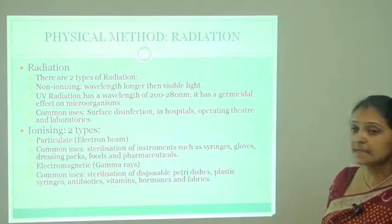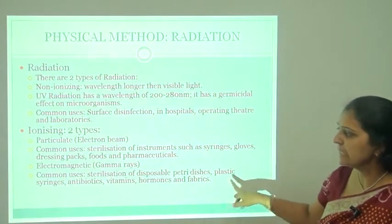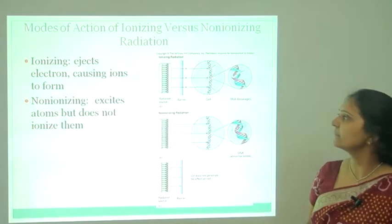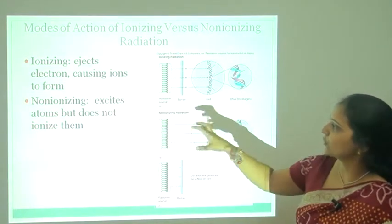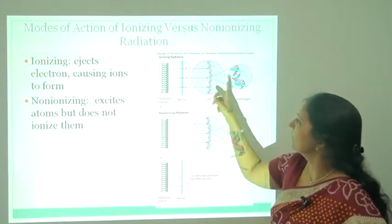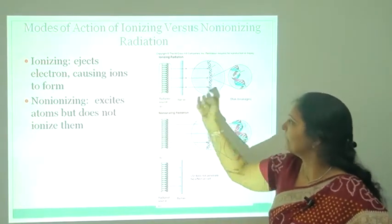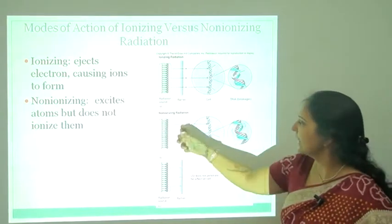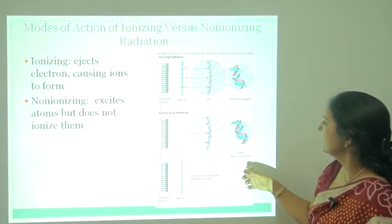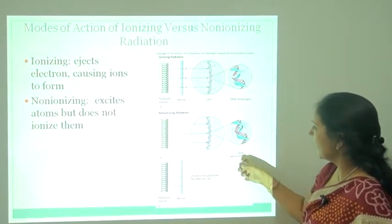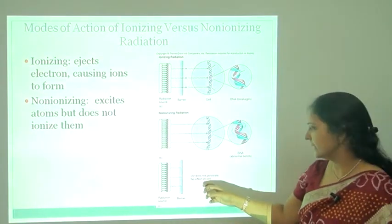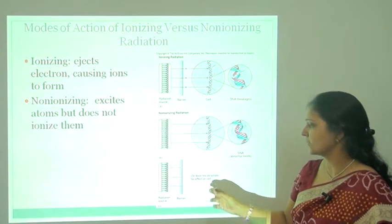Gamma rays are used for sterilization of disposable Petri dishes, plastics, syringes, antibiotics, vitamins, hormones, and fabrics. Ionizing radiation ejects electrons causing ions to form — the electron beam damages DNA. Non-ionizing radiation causes abnormal bonding in DNA. UV radiation does not penetrate deeply and has no effect on deeper cells. Cold sterilization involves no heat. Gamma rays are the most penetrating; X-rays are intermediate; cathode rays are the least penetrating.